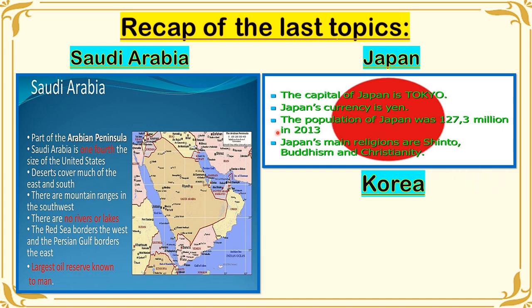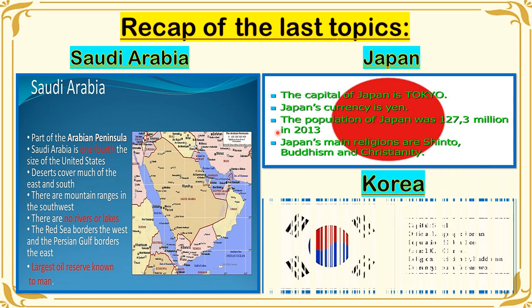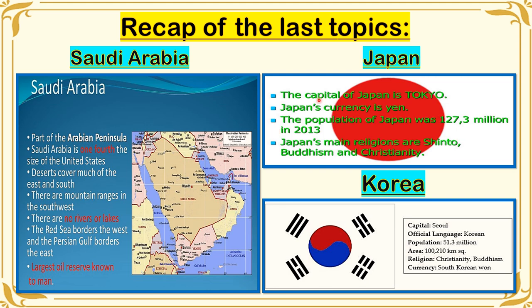The last topic that we discussed is about Korea. The capital city of Korea is Seoul and its official language is Korean. The population is 51.3 million. The religions are Christianity and Buddhism. The currency is the South Korean won. These were the three topics that we have discussed last week.